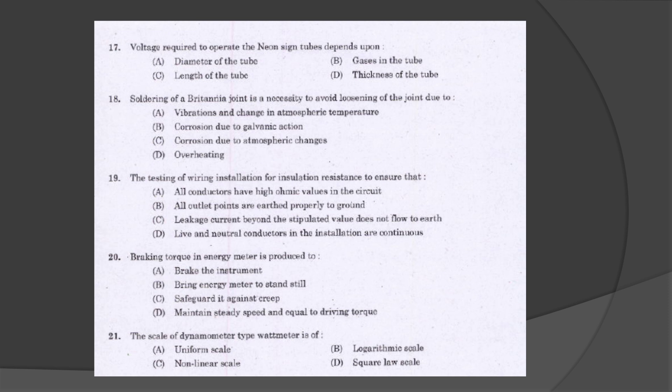The voltage required to operate the neon sign tube depends upon the length of the tube. Soldering of a Britannia joint is necessary to avoid loosening of the joint due to vibrations and change in atmospheric temperature. Testing of wiring installation for insulation resistance ensures that leakage current beyond the stipulated value does not flow to the earth.